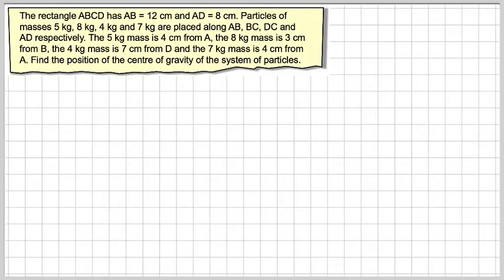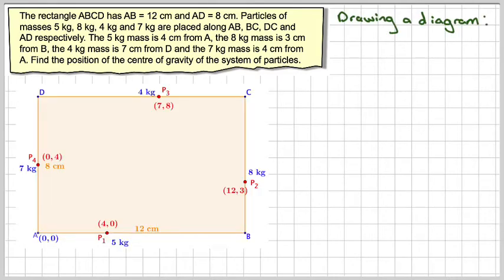So it's essential here that we draw a diagram. So here we have my diagram. Here I have my rectangle ABCD. I have a weight of 5 kilograms, 4 centimetres from A. So I set up some sort of coordinate system where A is the origin. So this is 4 from A.